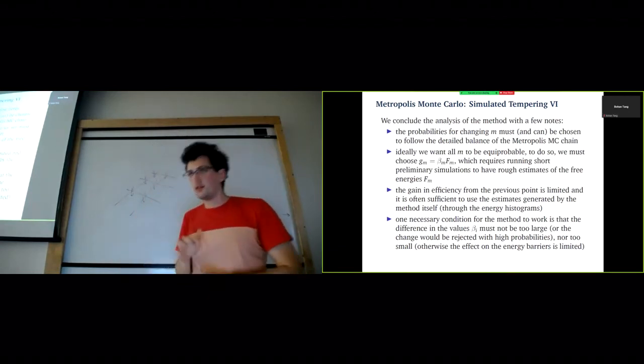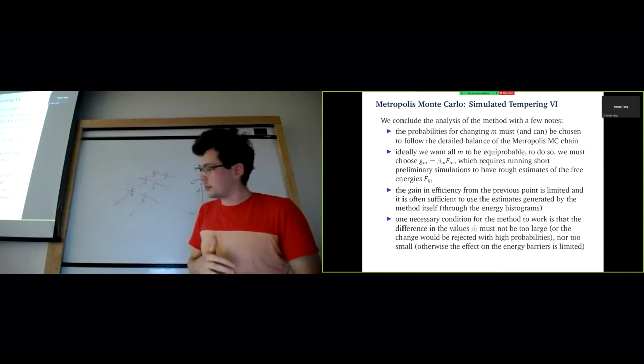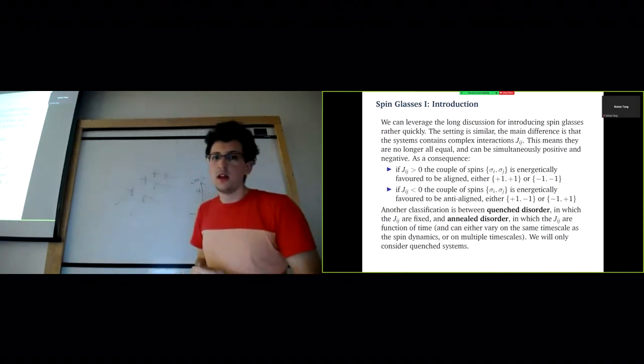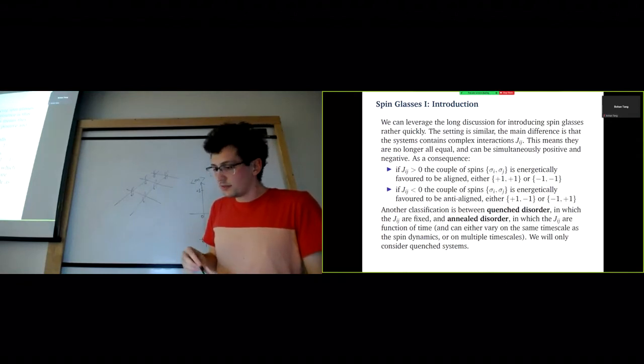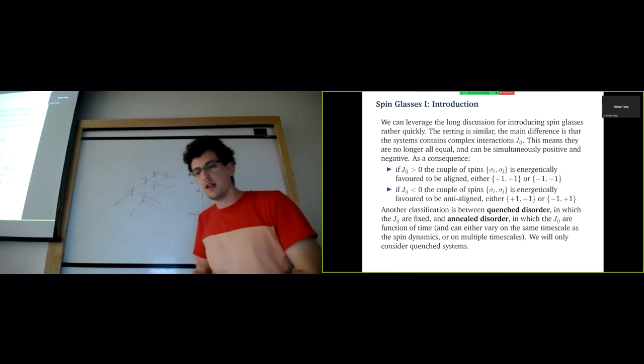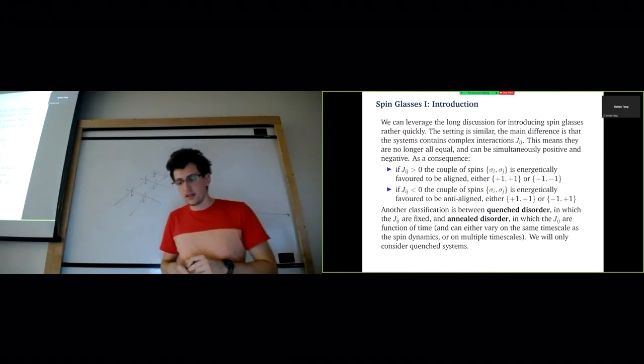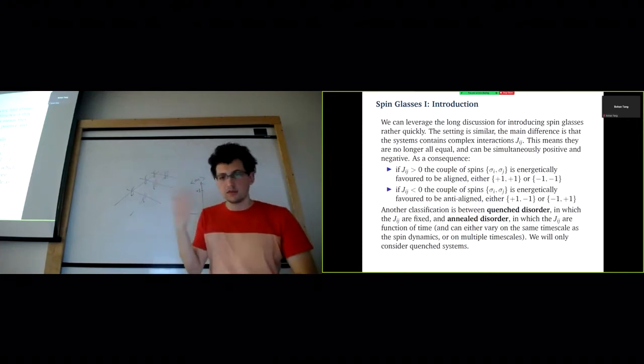This was the first of the two contributions that I wanted to talk about. I'm now moving to the second one, which is about spin glasses. A spin glass is essentially a modified version of an Ising lattice. The underlying system is really the same in the sense that we have a collection of spins that can either be plus or minus one. But what changes is that the couplings are no longer all of the same sign, and so there is no obvious solution like all the spins pointing up and all the spins pointing down.